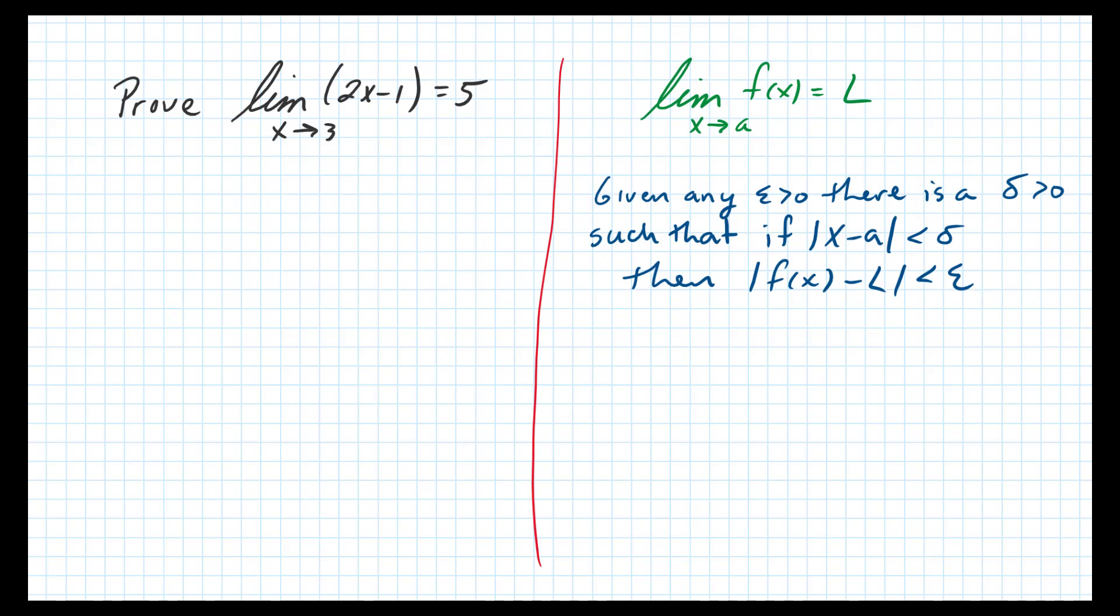Okay, so in our particular case, if x minus 3 is going to be less than delta, then what we're going to have to prove is that f(x) minus L is less than epsilon. So let's explore what this quantity is.